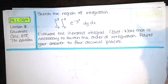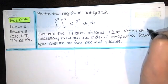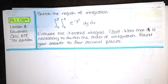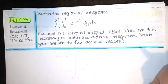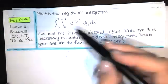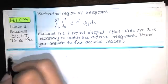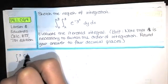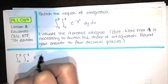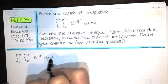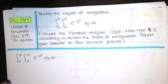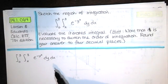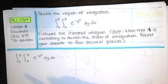It is necessary to switch the order of integration. Round your answer to four decimal places. So let's start by writing down the integral — it's really an iterated integral. Now remember, these bounds will give you enough information to infer that region of integration.